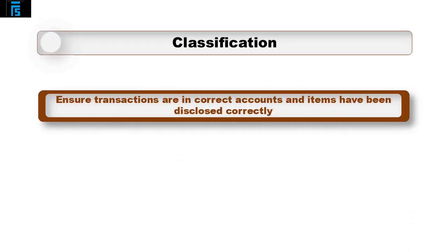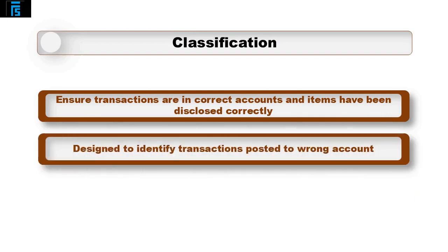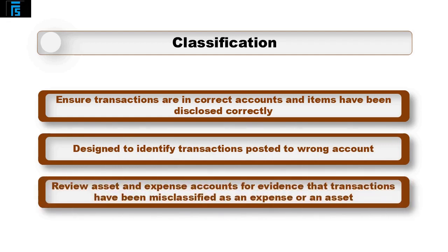Classification is to ensure that transactions are in the proper accounts and items have been disclosed correctly. Audit tests should be designed to identify transactions posted to the wrong account. An example would be to review the asset and expense accounts for evidence that transactions may have been misclassified as an asset or expense.